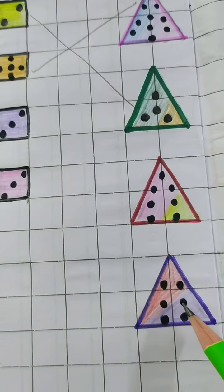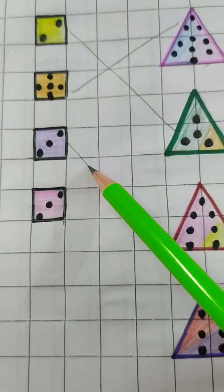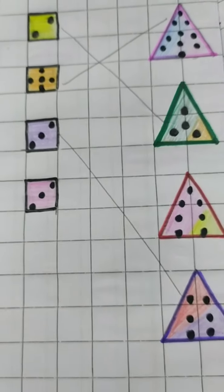1, 2, 3, 4, 5, 6. Oh, yes! We got the answer. So what we'll do? We'll draw a line to match them.